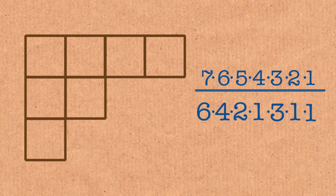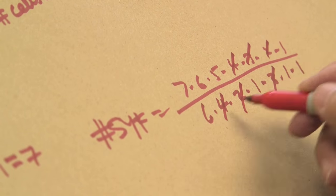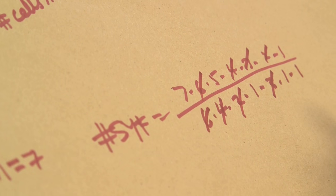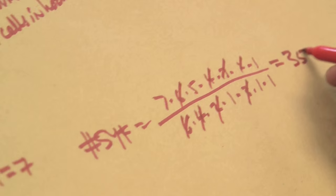And so the formula says that I should take 7 times 6 down to 1, and divide by 6 times 4 times 2 times 1 times 3 times 1 times 1. And so let's do that computation. I'll cancel the threes, cancel the fours, cancel the twos, cancel the sixes. And it looks like we get 7 times 5, or 35. The number of standard Young Tableau of this shape is 35.